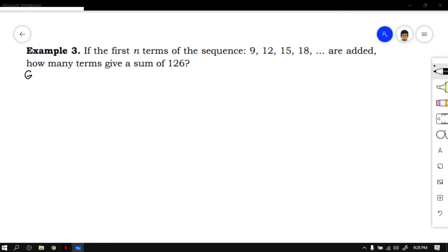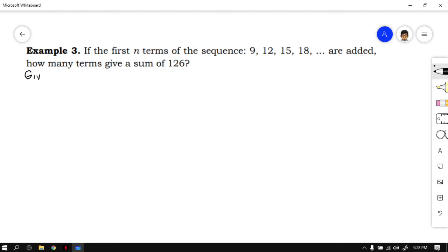Again, let's first start with writing down the given. Your first term according to the problem is 9, and the sum of the terms is 126. And you need the common difference. The common difference is obtained by subtracting 12 and 9, so 12 minus 9, that is 3. So the common difference is 3.